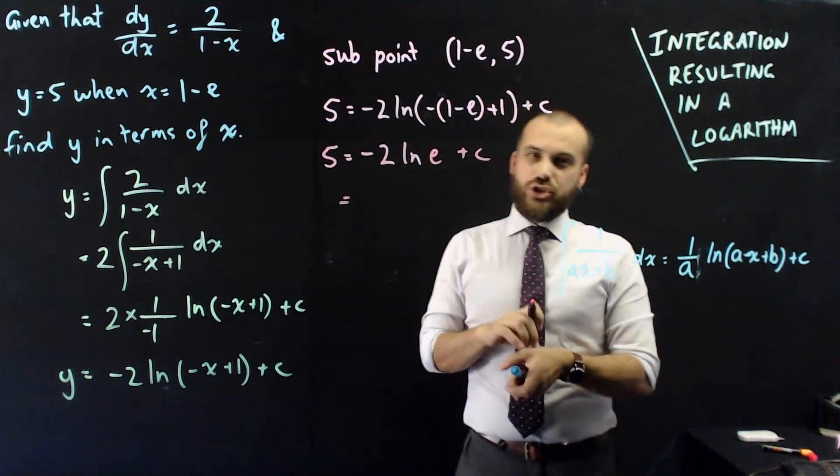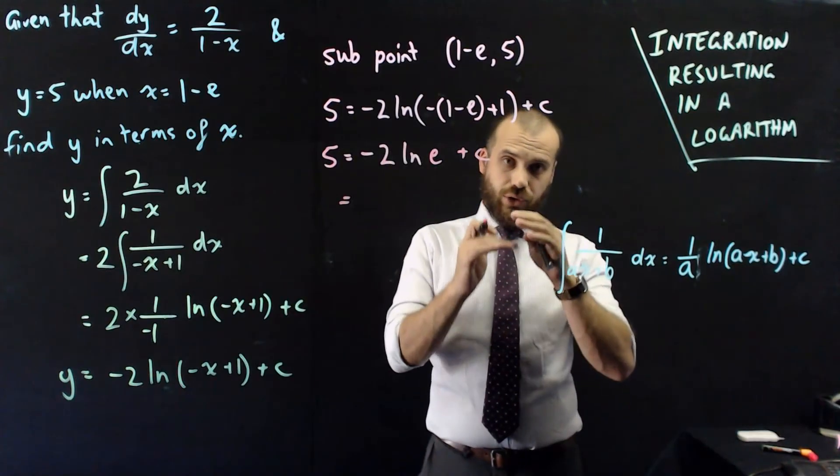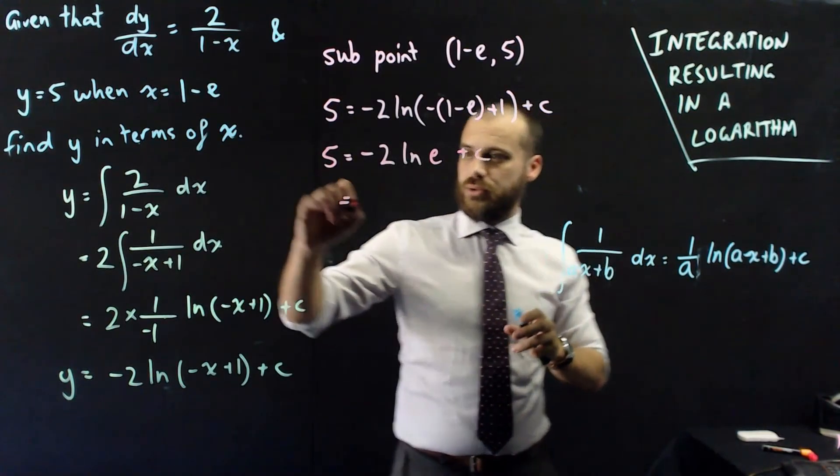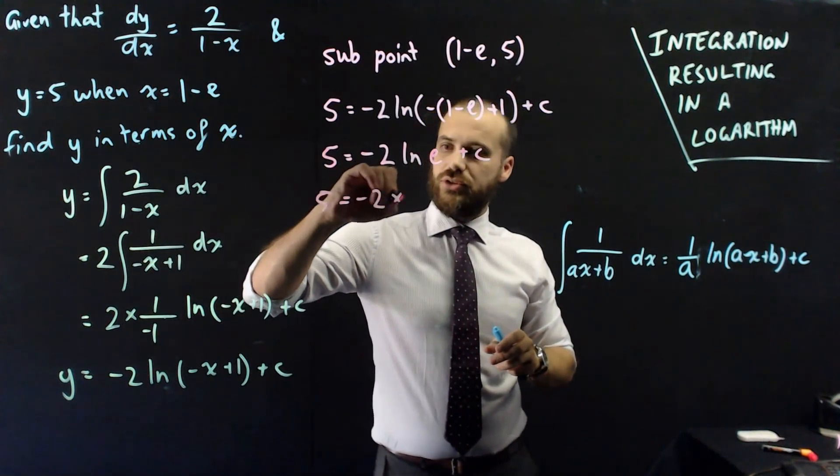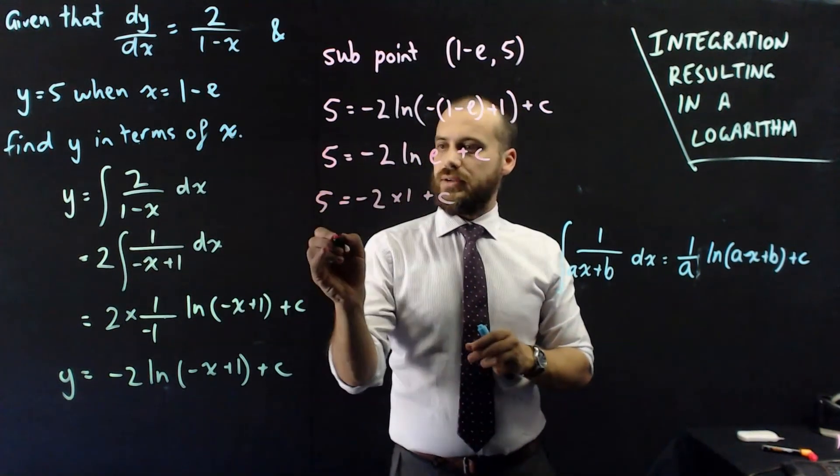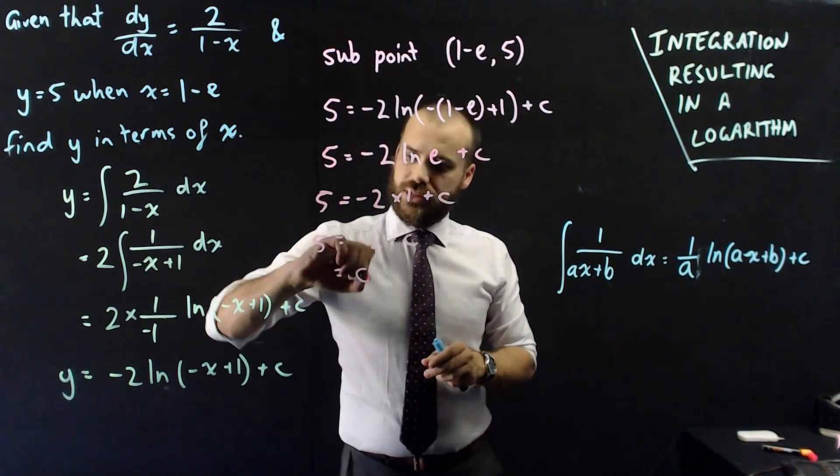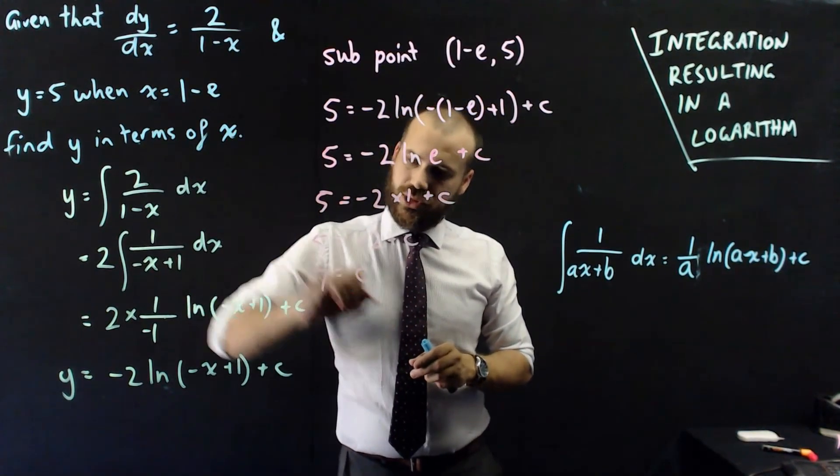Okay, and you should know that log base e, e, any log with the same base and an argument there is going to be 1. So, we get 5 equals negative 2 times 1, plus c. 5 equals negative 2 plus c. So, c equals 5 plus 2, which is 7.